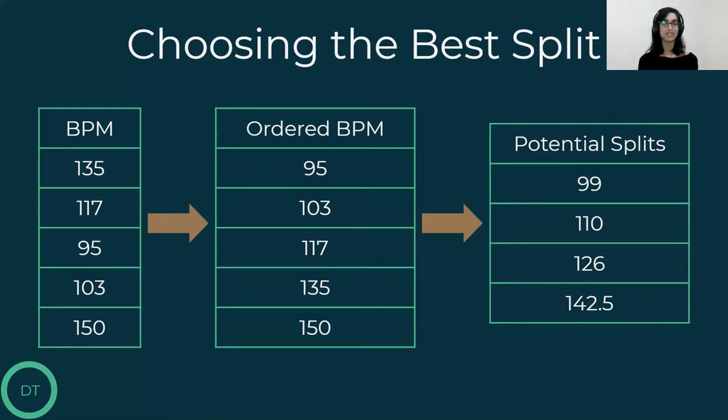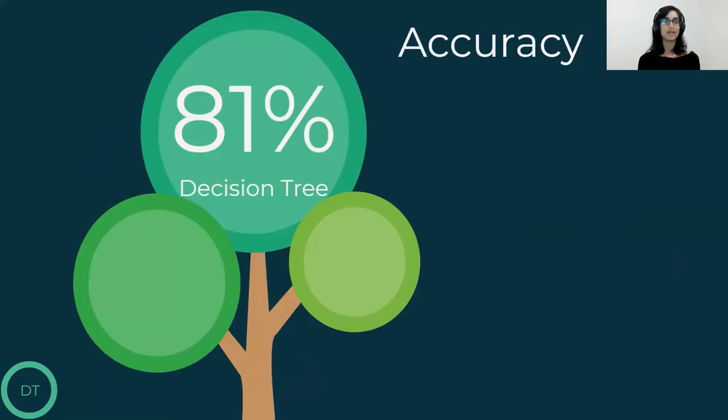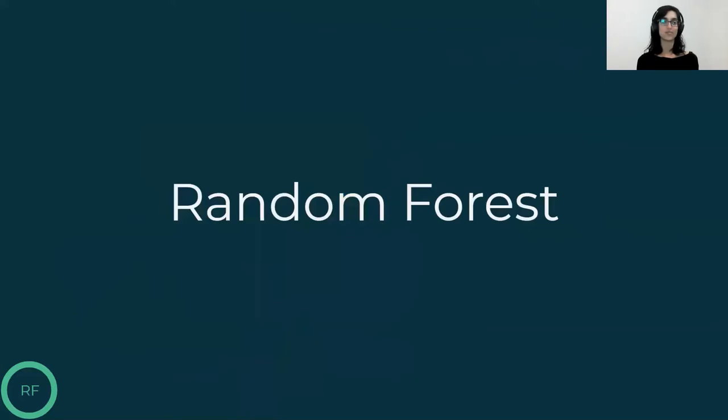So now that we know how to build a decision tree, let's see how it performs on our classification problem. And remember that it's classifying songs into four genres and not just metal. So we got 81% accuracy, which is very nice, but I'm sure we can do better than that. So let's have a look at the popular tree-based classifier, random forest.